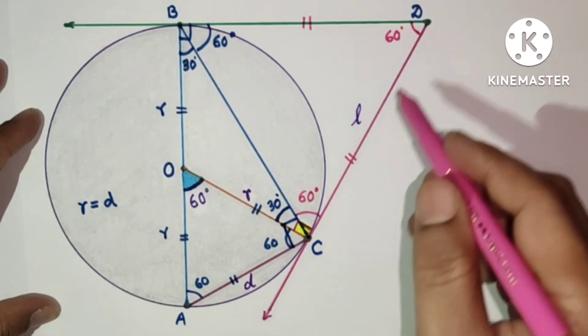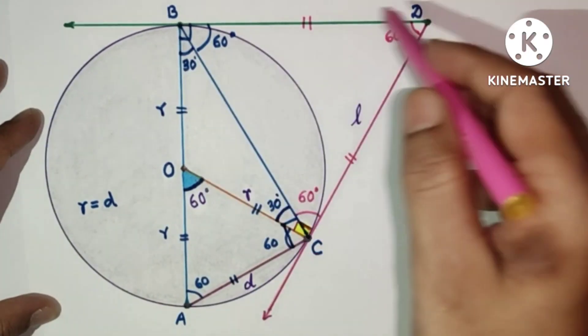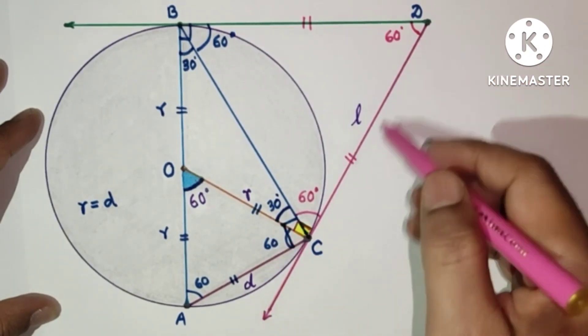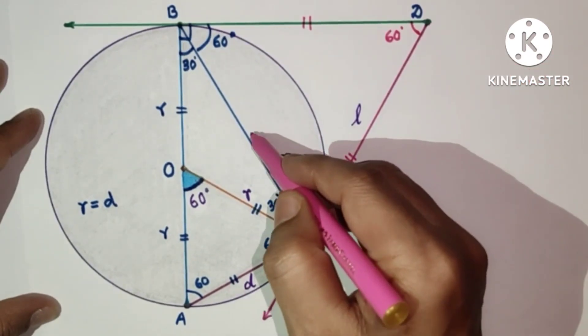So this length L is equal to, DB is equal to BC. All will be equal. Since this is L, so this will also be L.